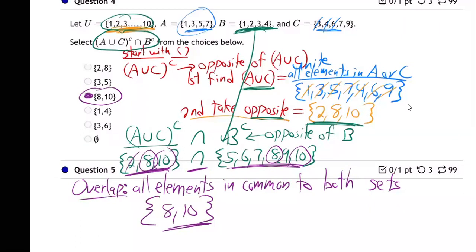Overlap, right? You turned over right here. That meant overlap. All right, so you see how we did that. Again, we started with the parentheses, which is the A union C complement, which meant find A union C, unite everything in A and C.